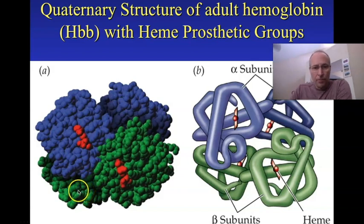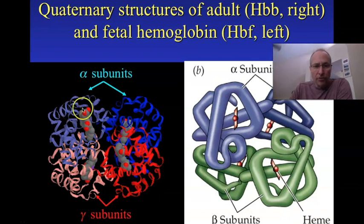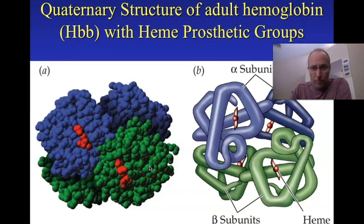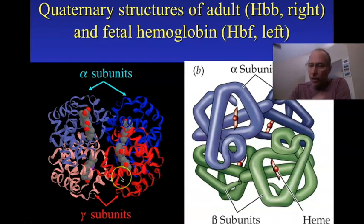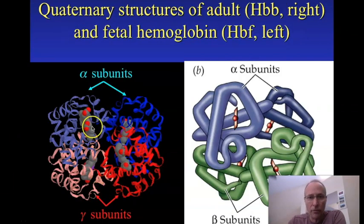If we look at fetal hemoglobin, it is similar — there are four globins bound together in a tetramer. There are two alpha structures and two gamma structures. The alpha globins, gamma globins, delta, epsilon, and zeta are all coming from different genes. So the answer to why adult hemoglobin has two alphas and two betas, while in the fetus it's primarily two alphas and two gammas, is that there are different genes for different globins that turn on and off at different times.